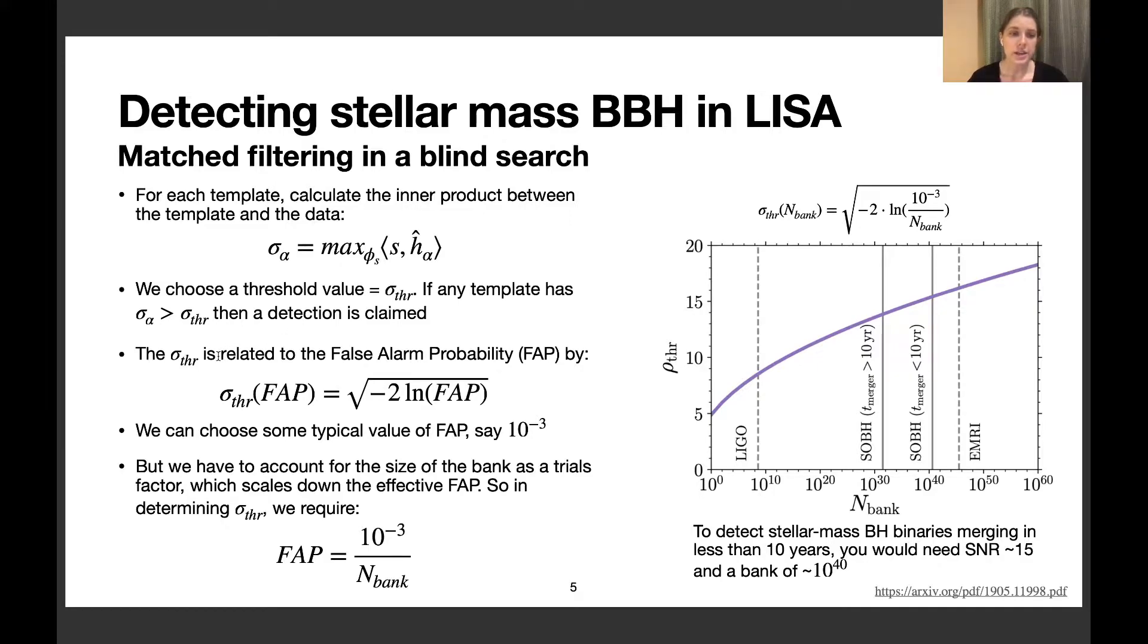We can use the relationship between the σ threshold and the false alarm probability by finding an acceptable value of false alarm probability, like 10^-3. But we have to account for the size of the template bank as a trials factor, because with a very large template bank, the more templates we compare our data to, the higher probability that a signal containing only noise will have a large overlap. So we scale down our acceptable value of false alarm probability by the size of the bank.